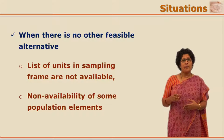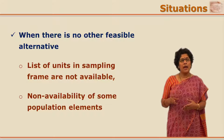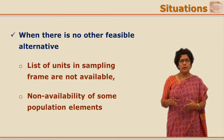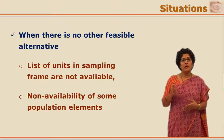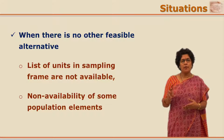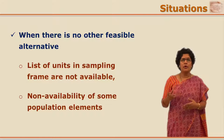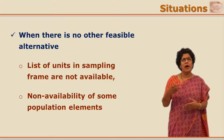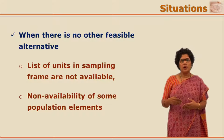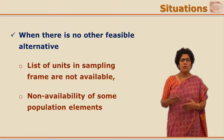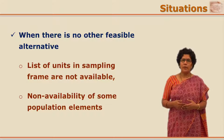Sometimes some population elements are absent, so one cannot ensure equal opportunity for every population unit to be represented or to be a part of the sample. In such cases, one goes for the non-probability sampling method option.